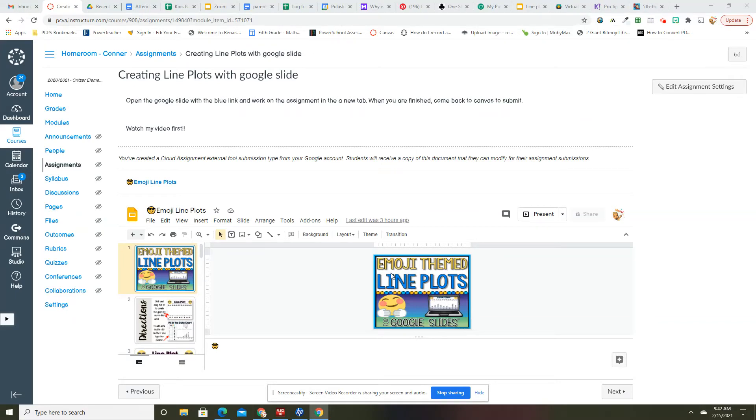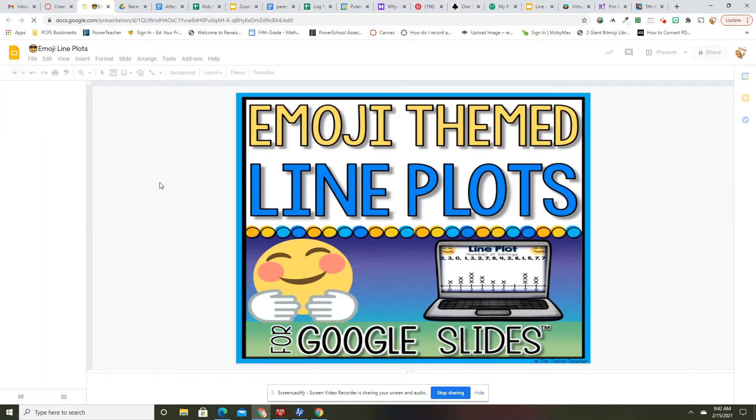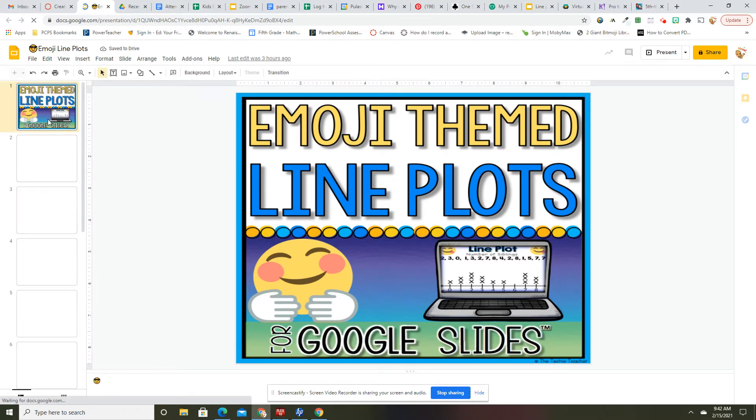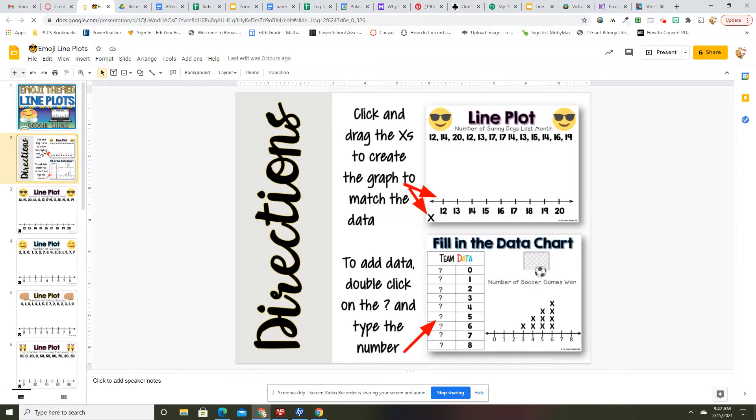All right, so we are working on line plots still and you're going to come to this line plot with emojis. Click on it like always. So you're going to have a few different ways to do this today. You're going to create a line plot with data and you're going to create a data chart with a line plot. You're going to click and drag the X's and then you're going to double click the question marks to add the number. All right, so let's get started.